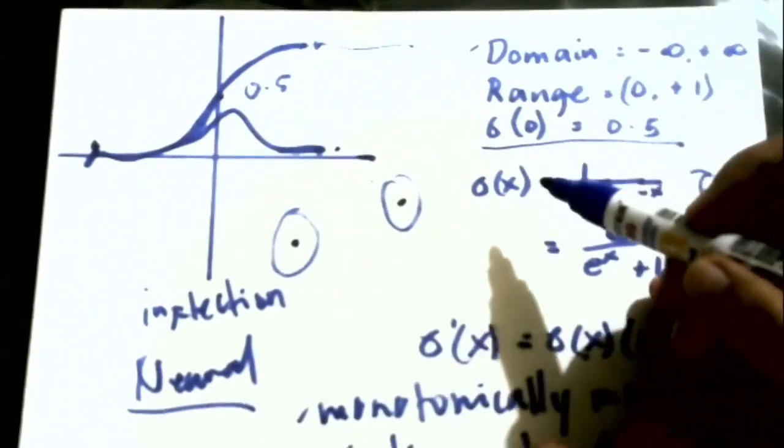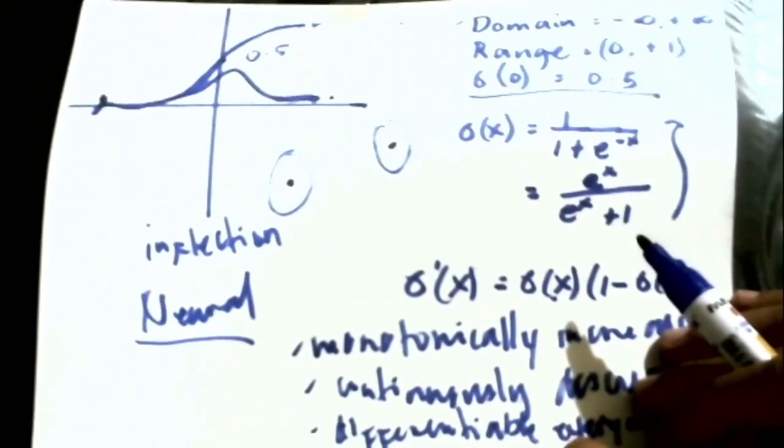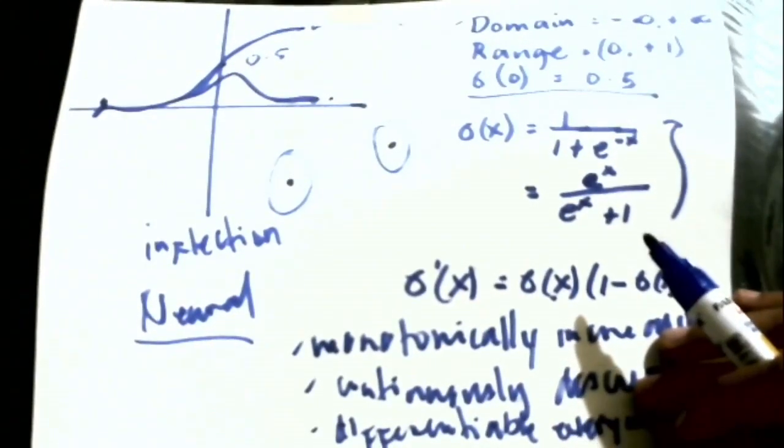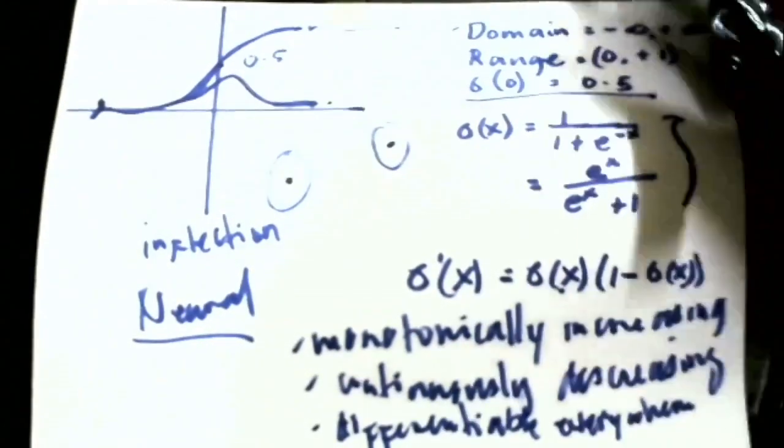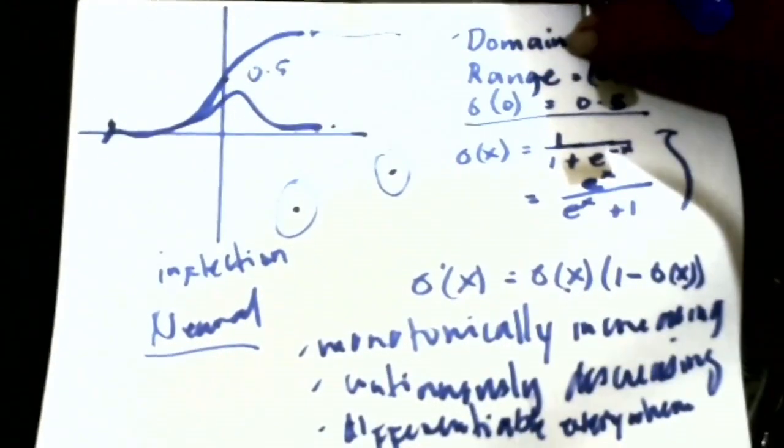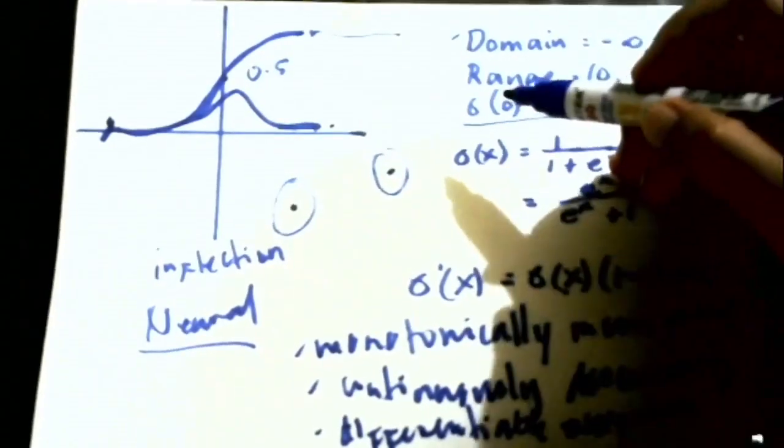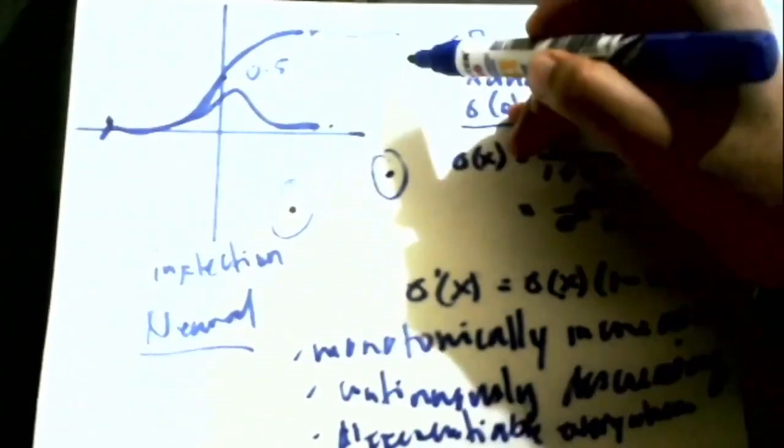So the question would be this. Why do we use sigmoid function as a function in the neural network or even in deep learning? The very simple answer to that is that when a certain value is closer to one then there is a great possibility that it's going to be activated.